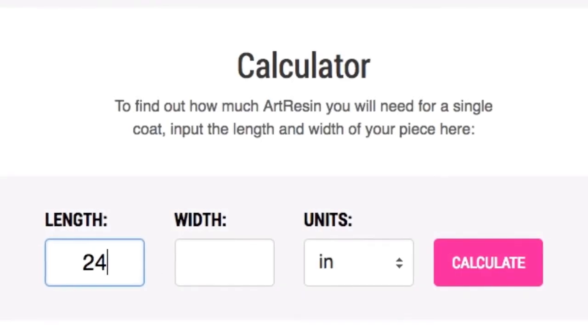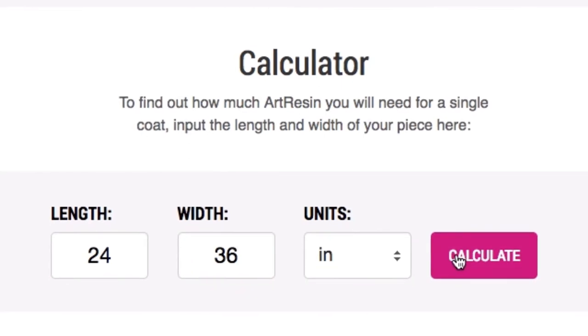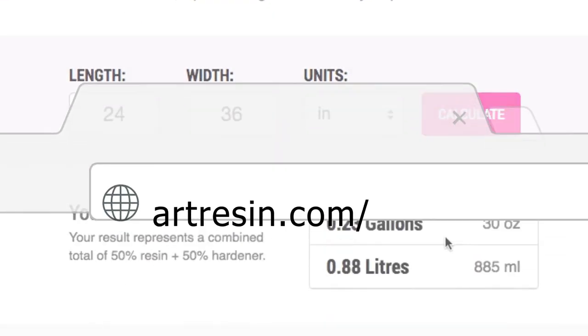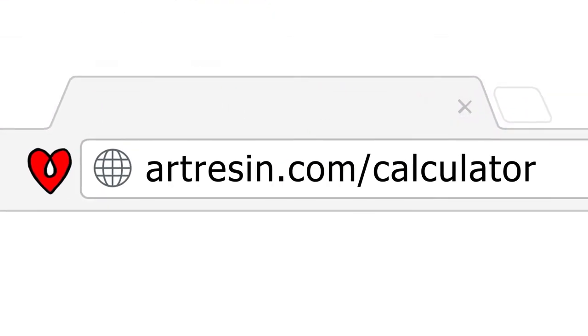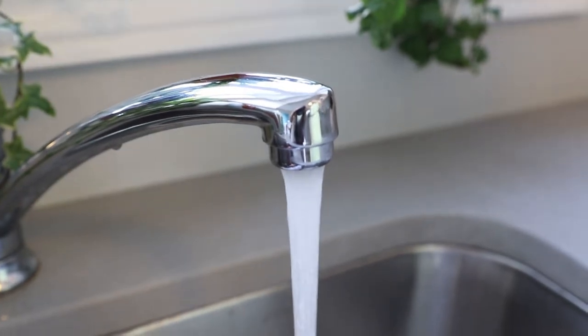To determine how much art resin you'll need, use our resin coverage calculator at artresin.com/calculator. It's a good idea to warm the resin and hardener up in a water bath before measuring it out to reduce bubbles. Just make sure not to get any water in it as it will turn the mixture cloudy.